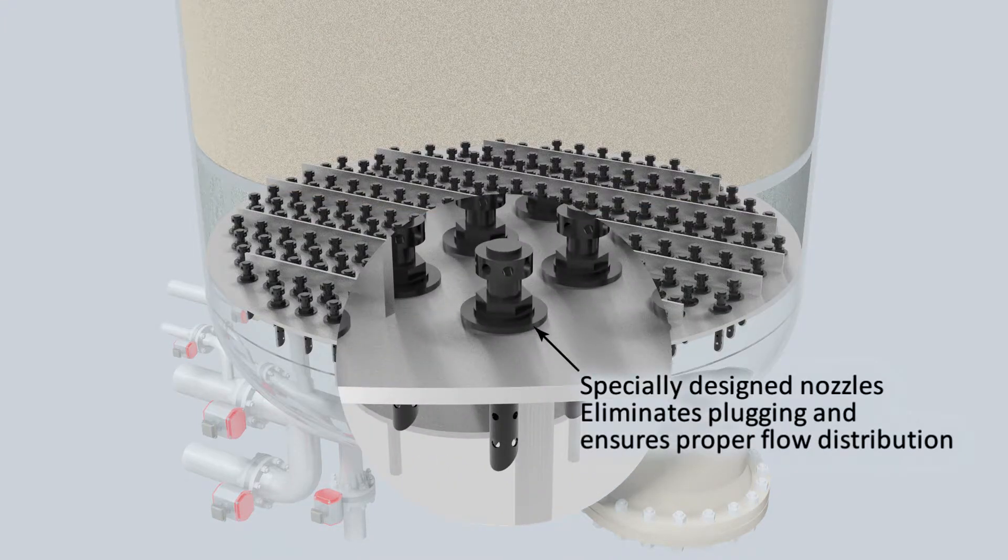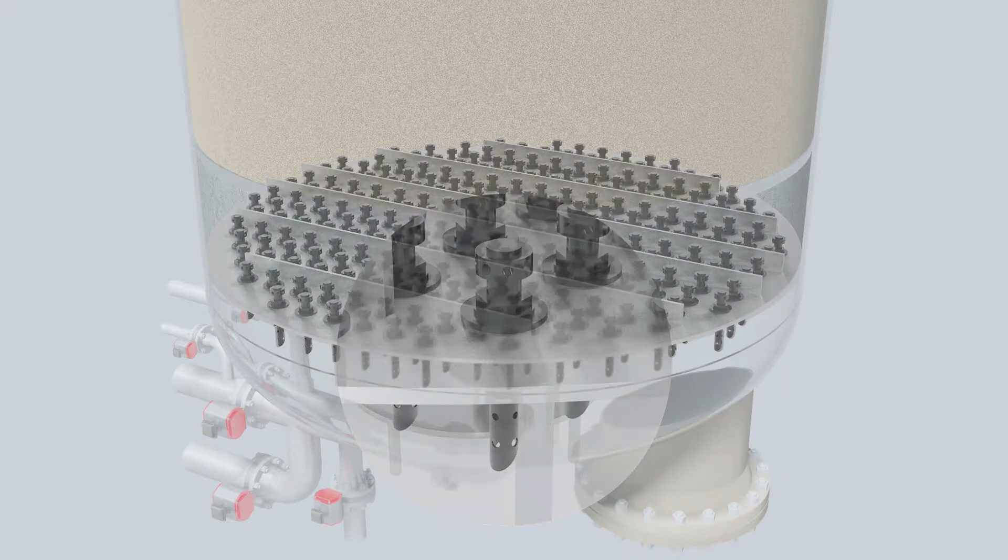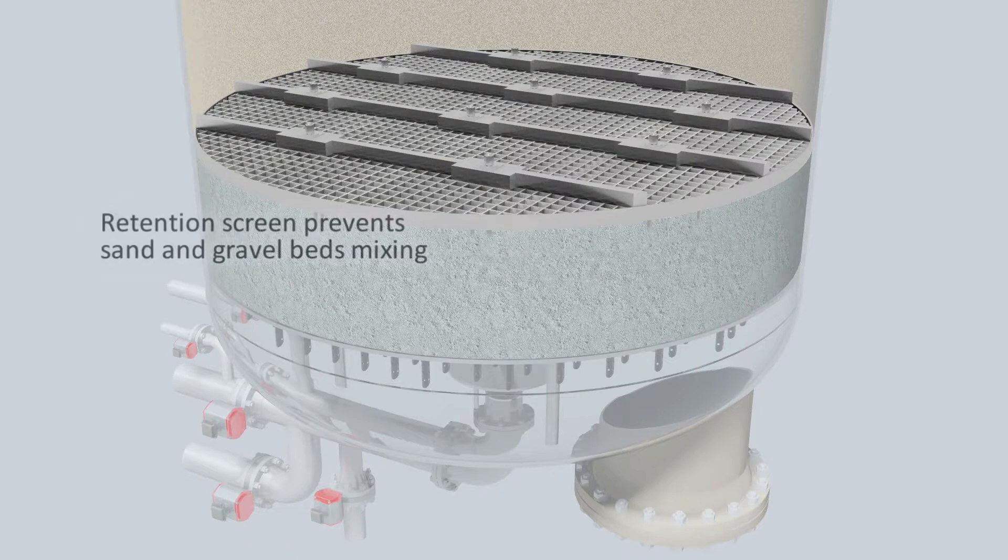The inlet distributor is a deck plate with nozzles sized for uniform flow distribution. A media retention screen is installed between the gravel and sand interface. The screen keeps the gravel from mixing with the sand.